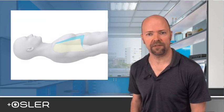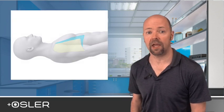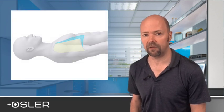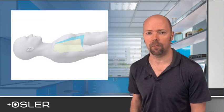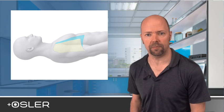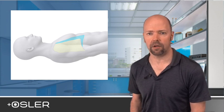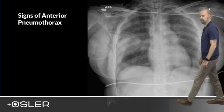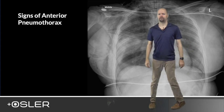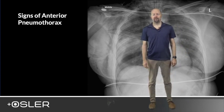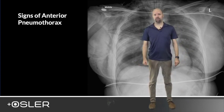Remember that when the patient is supine, air will rise to the top. This means that air will gather anteriorly to the patient's lung when they're in the supine position. This can make it a lot harder to spot. Fortunately, however, there are some clues.